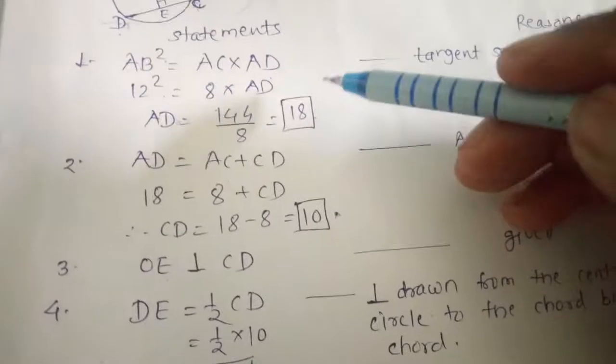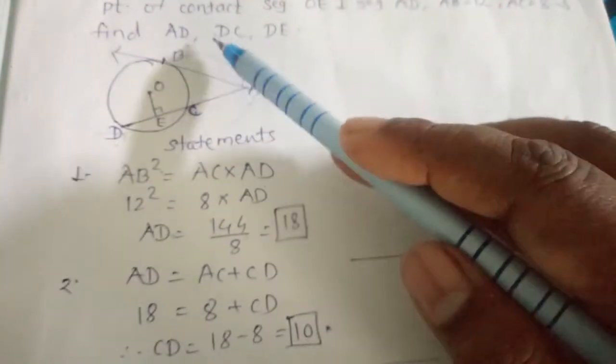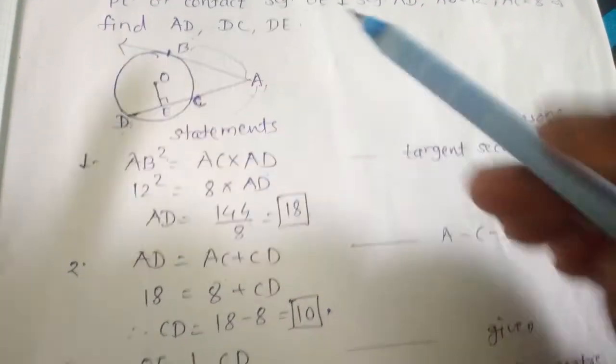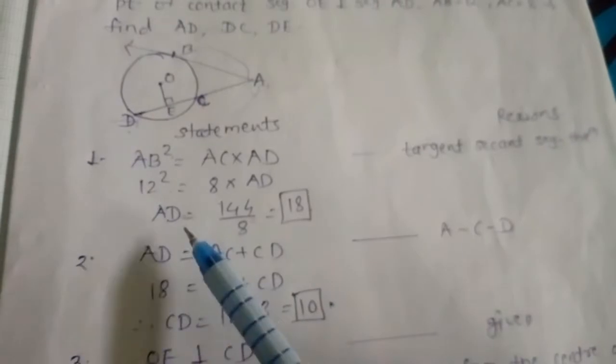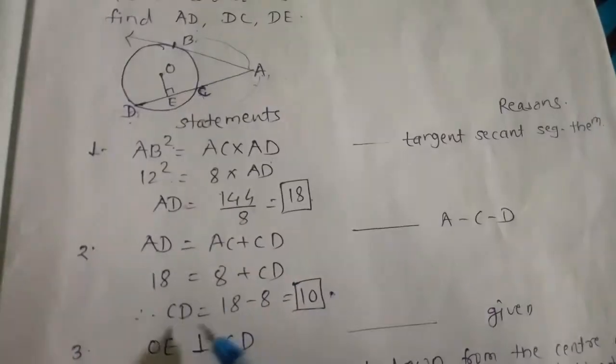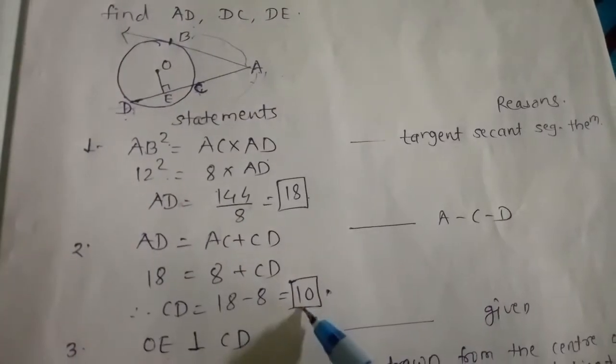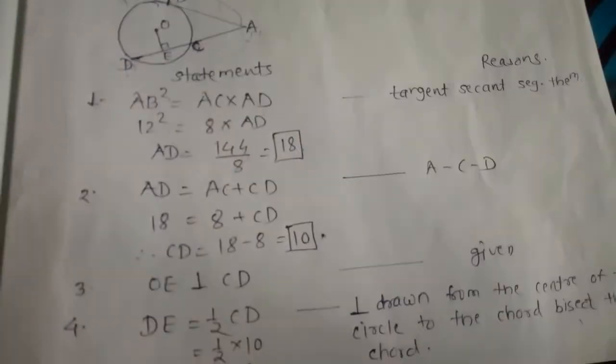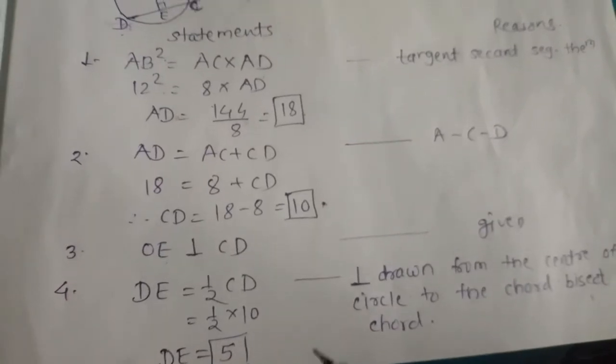So the answers are: AD = 18, DC = 10, and DE = 5.